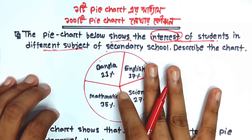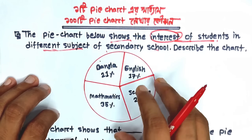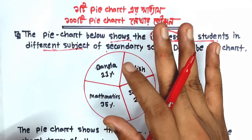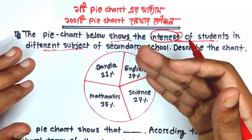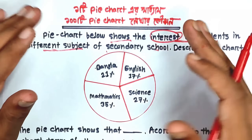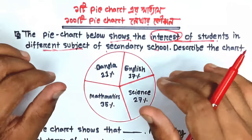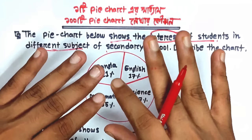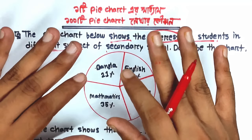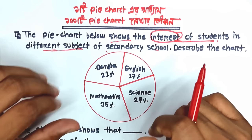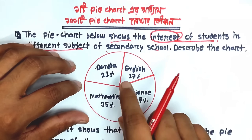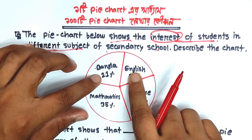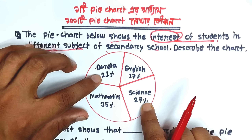Okay, pay attention here. Students — those who are learners — how many prefer Bangla subject? Looking at the chart: Bangla subject is shown, and 21% of students are involved in science.